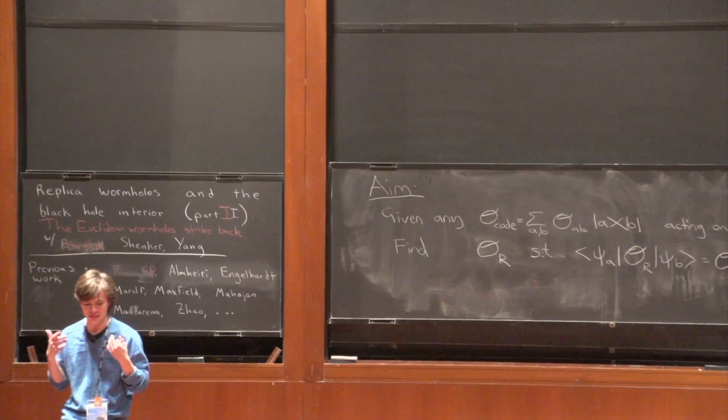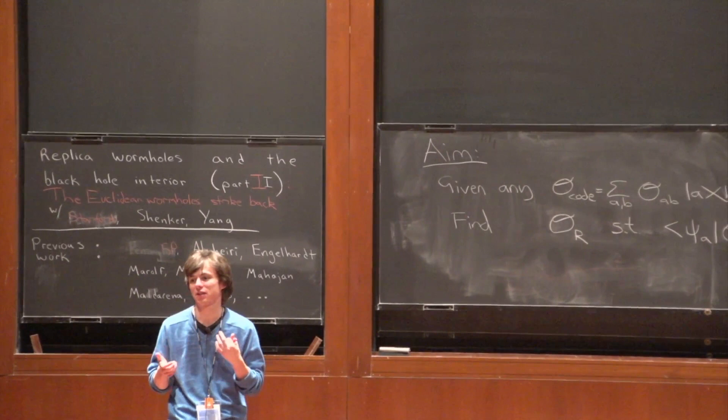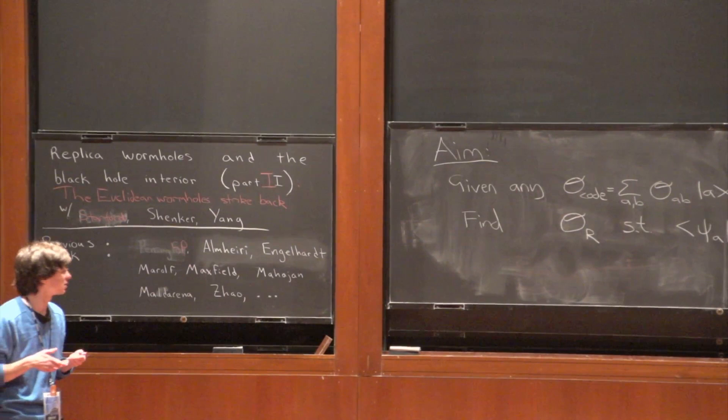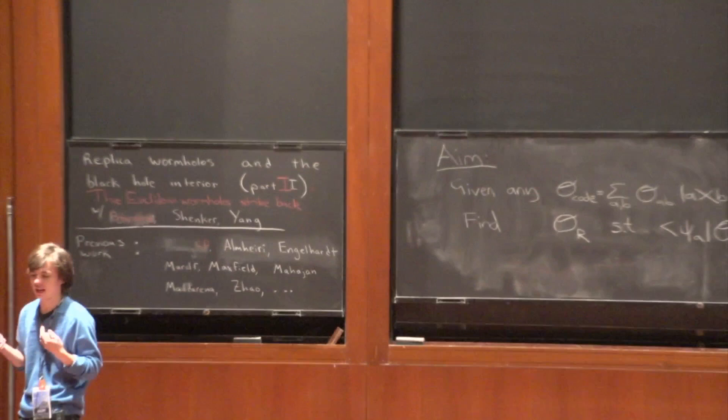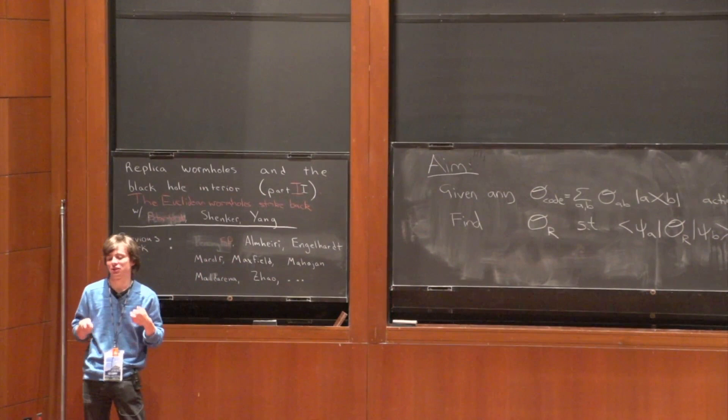Douglas was talking about how we could use a bulk path integral that includes replica wormholes — Euclidean wormholes connecting different replicas — and if we did that calculation properly, then in simple toy models and also more generally, you can correctly calculate the full page curve.